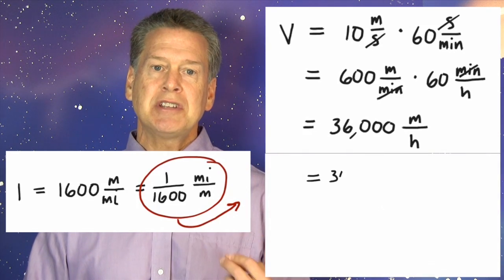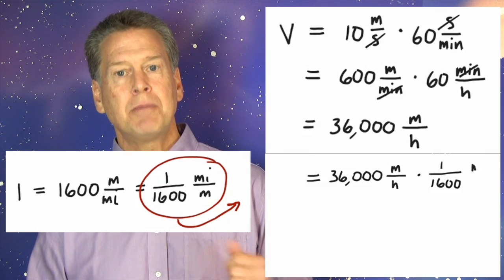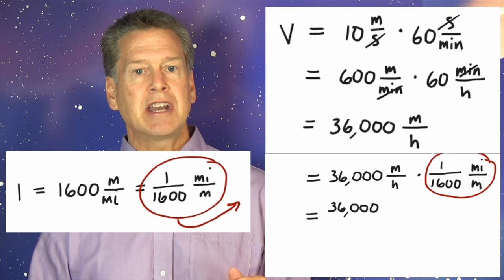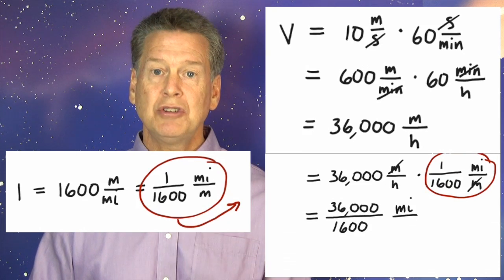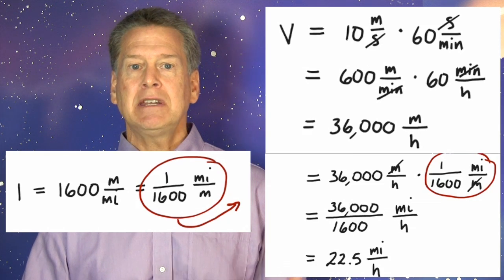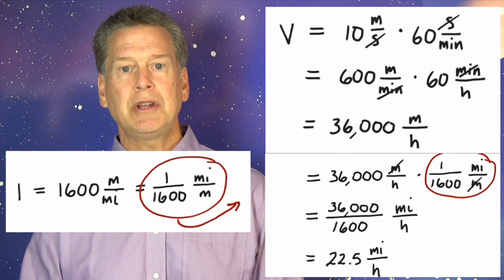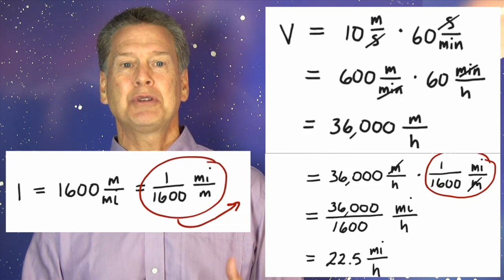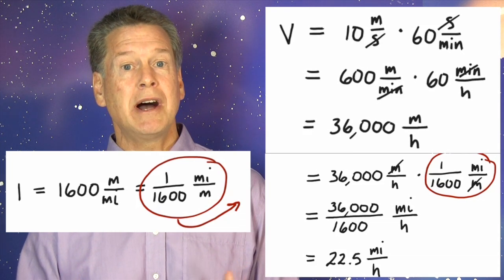V sub sprinter equals 36,000 meters per hour times 1 over 1,600 miles per meter equals 36,000 divided by 1,600 miles per hour, which is 22.5 miles per hour. So a speed of 10 meters per second is between 22 and 23 miles per hour. You're a very good sprinter if you can run alongside a car going a little bit faster than 22 miles per hour.